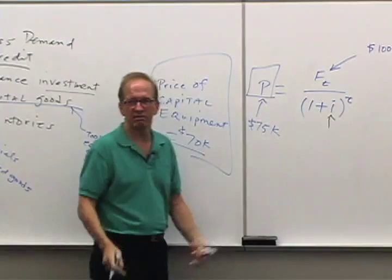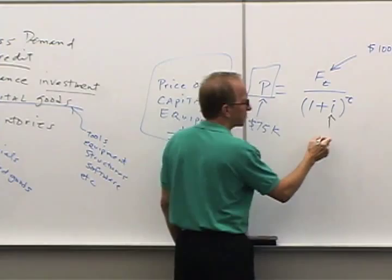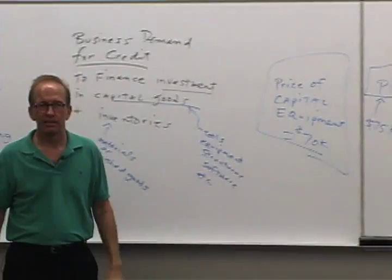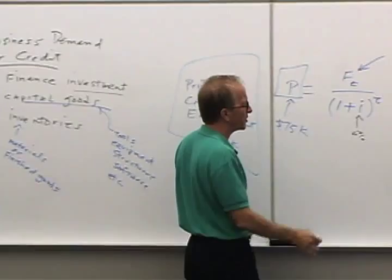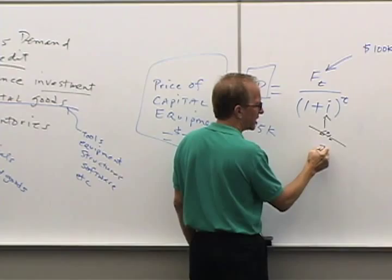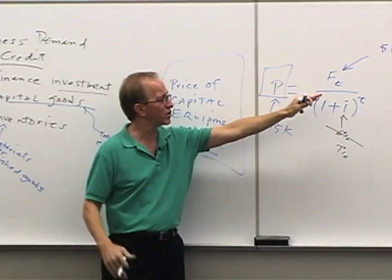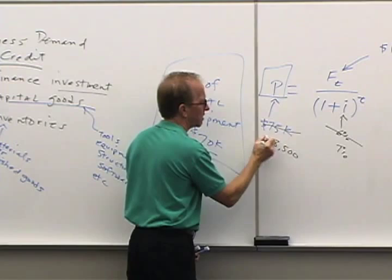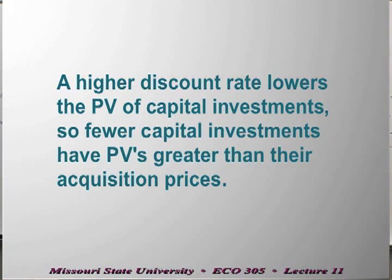Now, what happens if interest rates rise in the marketplace? If we can no longer borrow at 6% but now the discount rate is 7%, we go through the same $100,000 in future profits, calculate present value, and now it comes out to $68,500. Do we make that investment? No — because we don't spend $70,000 to get back $68,500. That's a loser.